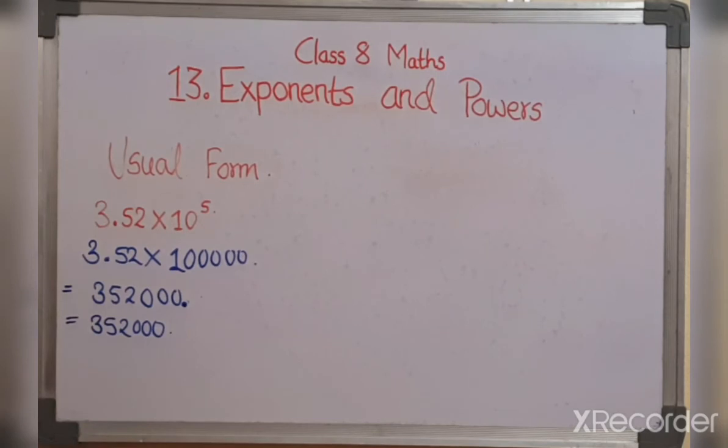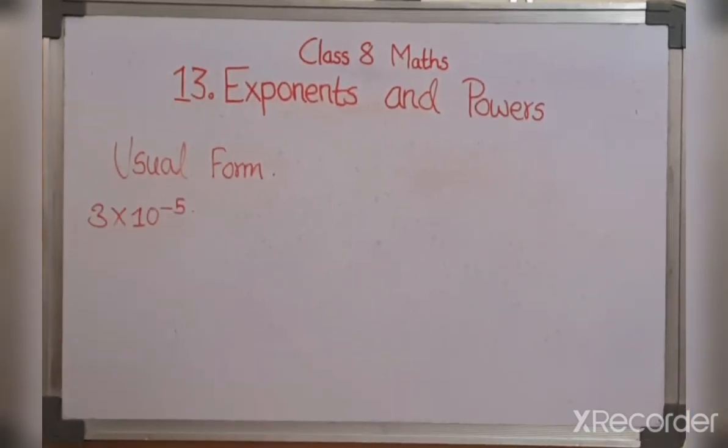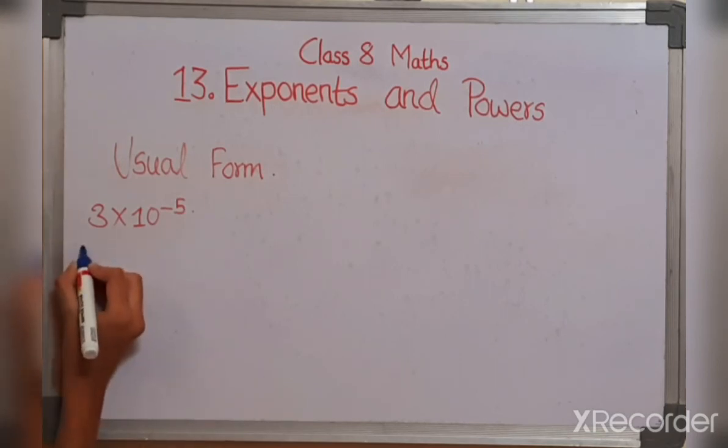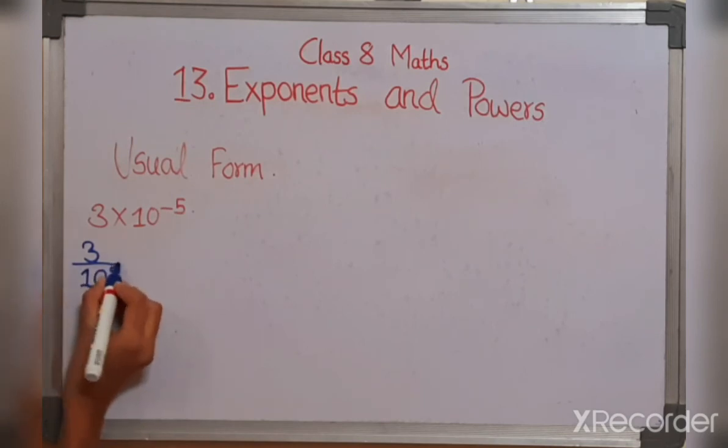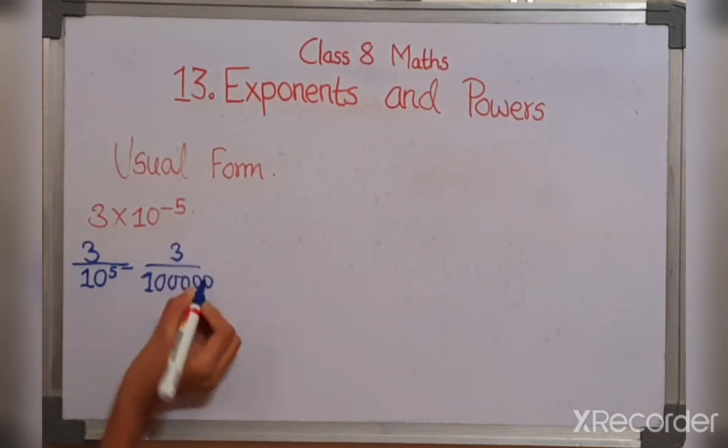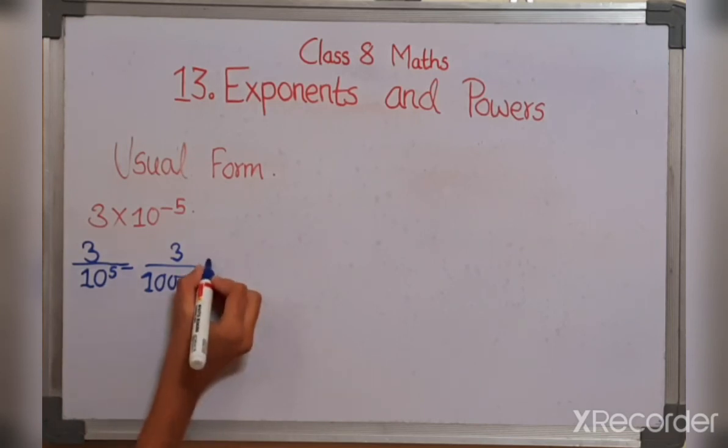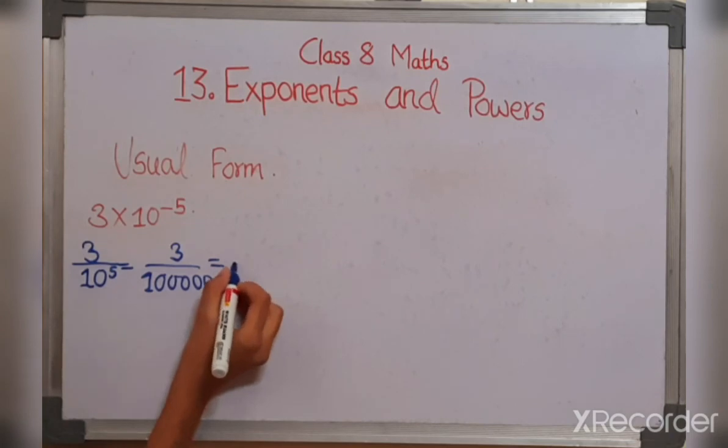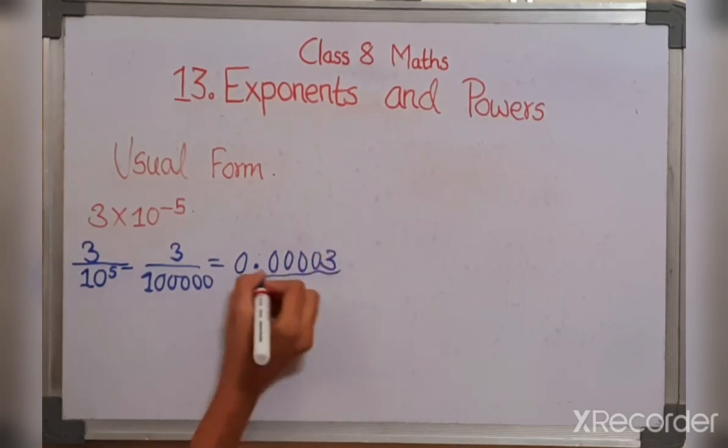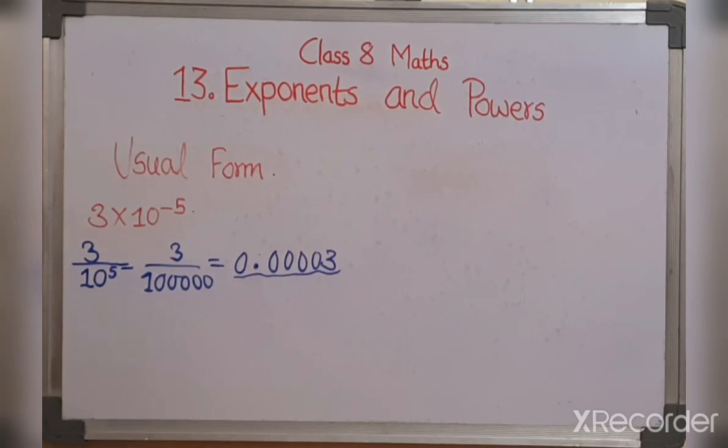Now let's see another one. So here the second one is 3 multiplied by 10 raised to the power minus 5. Here the power is in minus. So now let's see how we can solve it. So 3 upon 10 raised to the power 5, which is 100,000. Which is further equal to, when we are going to divide it, it is going to give 0.00003. So this is the final answer.